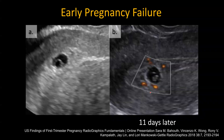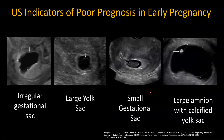What are findings that are suggestive of poor prognosis? An irregular gestational sac is one. Sometimes you may also see linear echogenic foci in the sac, which would suggest intrasac hemorrhage — that's suggestive of poor prognosis.